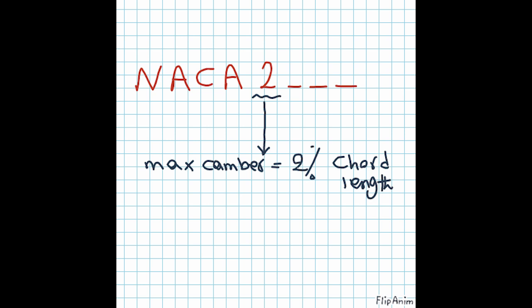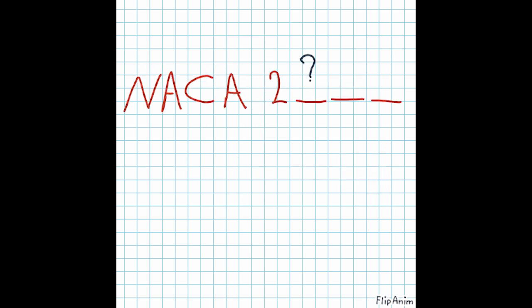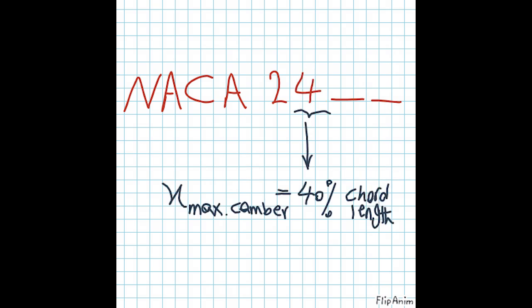Let's move on to the second digit. This tells us the position of the maximum camber along the chord line as a percentage. So if the second digit is 4, it means the maximum camber is located at 40% of the chord length from the leading edge. It's like knowing where the highest point of a hill is on a hiking trail.